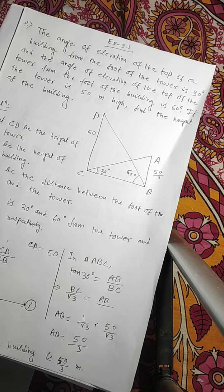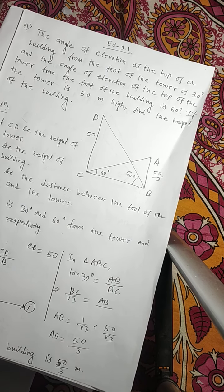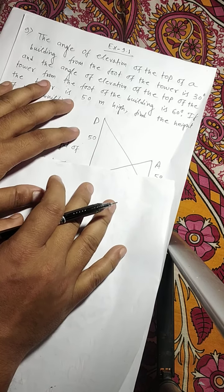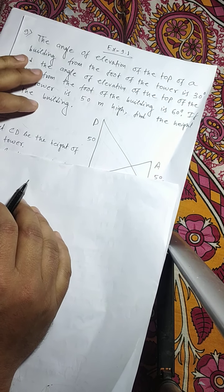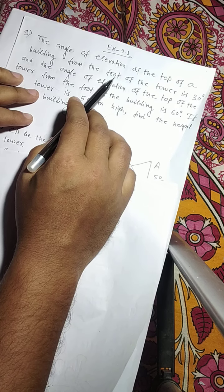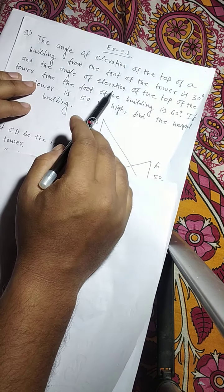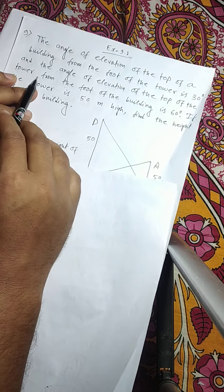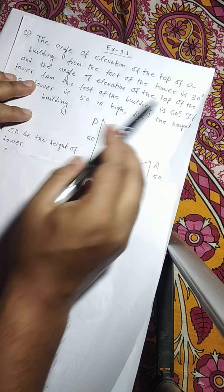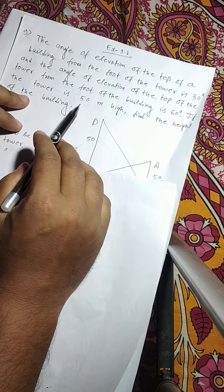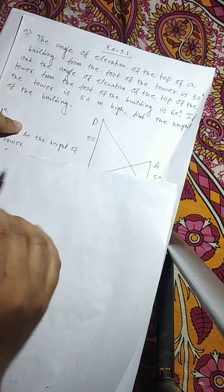Namaste students. Today I am going to discuss exercise 9.1, question number 9. The angle of elevation of the top of a building from the foot of the tower is 30 degrees, and the angle of elevation of the top of the tower from the foot of the building is 60 degrees. If the tower is 50 meters high, find the height of the building.